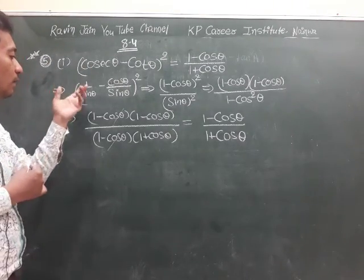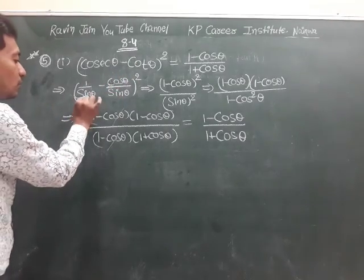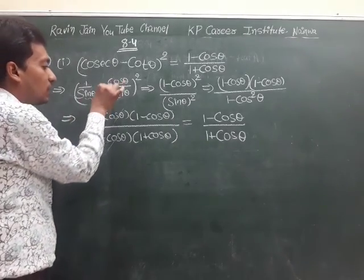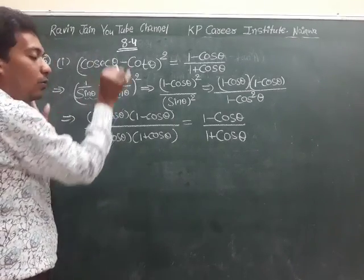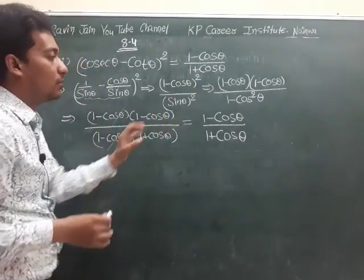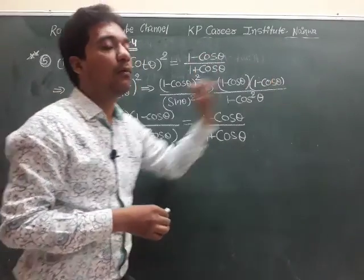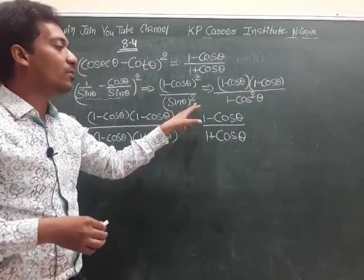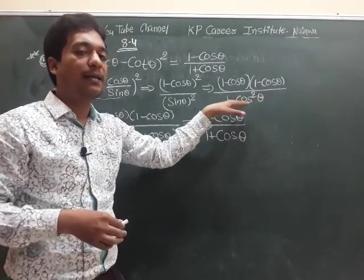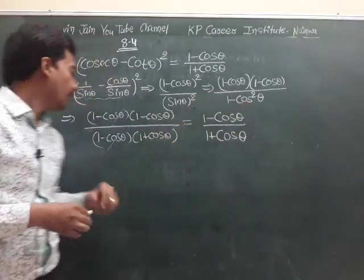Cosec θ = 1/sin θ and cos θ = cos θ/sin θ. Taking sin θ as LCM, it will become (1 - cos θ)/sin θ, whole squared. That gives (1 - cos θ)² / sin²θ. Here, (1 - cos θ)² means (1 - cos θ)(1 - cos θ), and sin²θ = 1 - cos²θ, using the identity sin²θ = 1 - cos²θ.